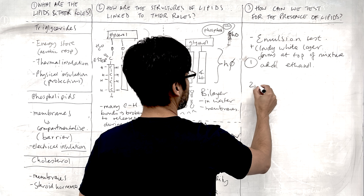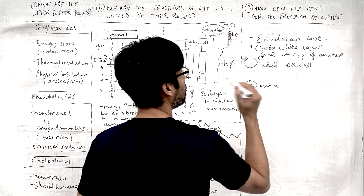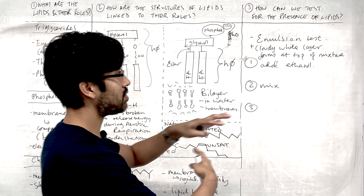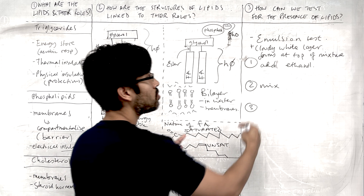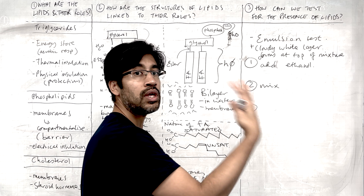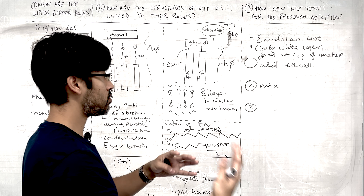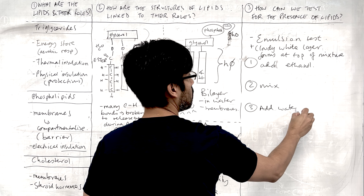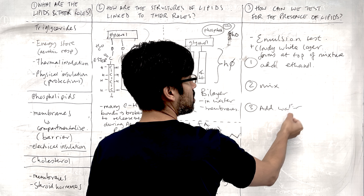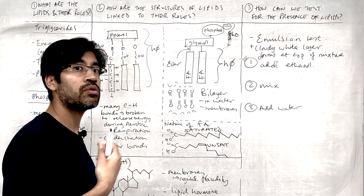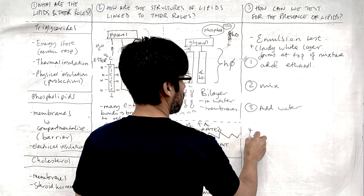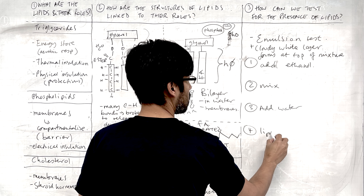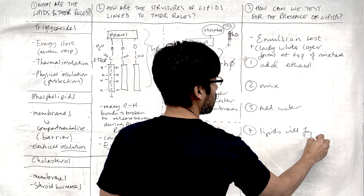Because unsaturated fatty acid chains are bent, the lipids cannot pack as close together. Unsaturated fatty acids tend to be more present in oils, because they're liquid at room temperature since they can't pack as closely together. The more saturated the fatty acids, the more closely and densely they can pack, and they tend to be solid at room temperature — which we call fats.